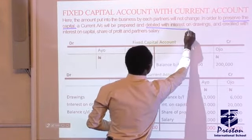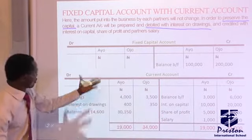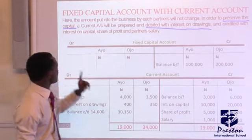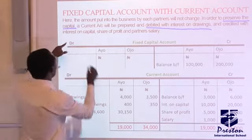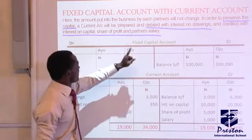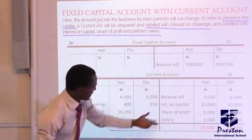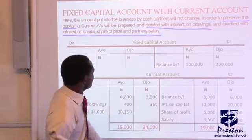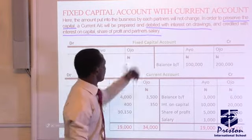The current account is debited with interest on drawings on the debit side, and credited with interest on capital, share of profit, and partner salary on the credit side.